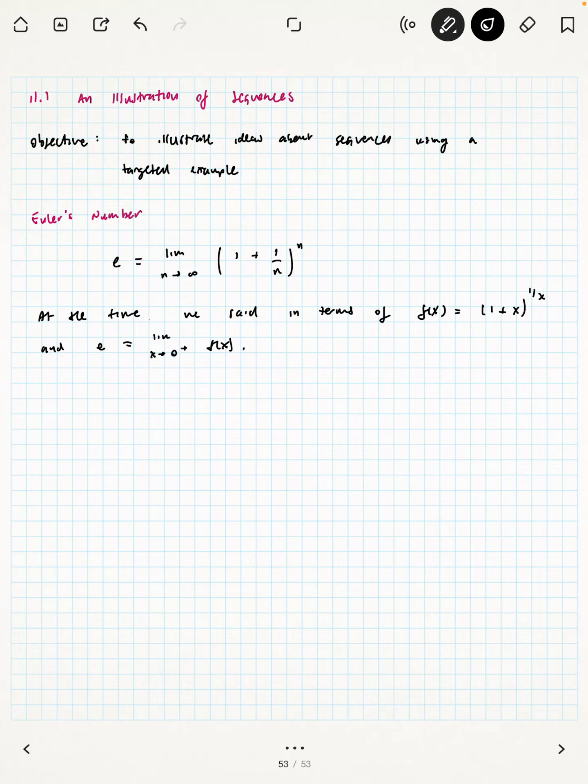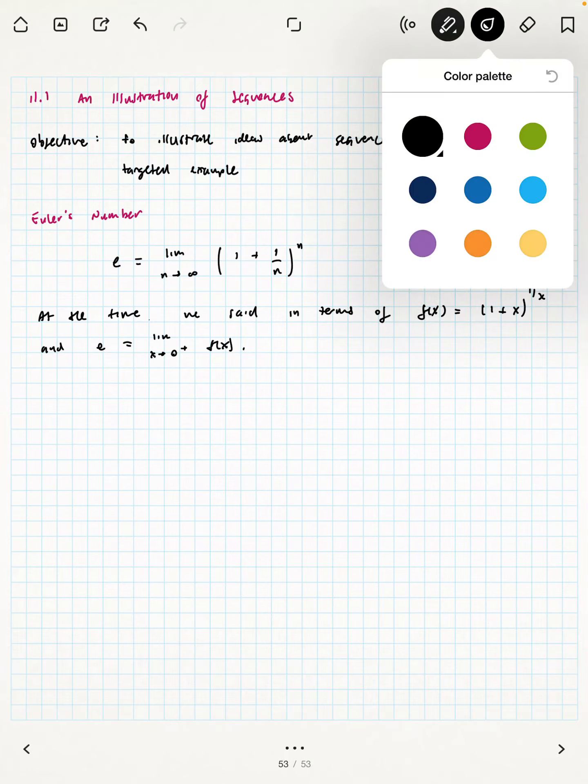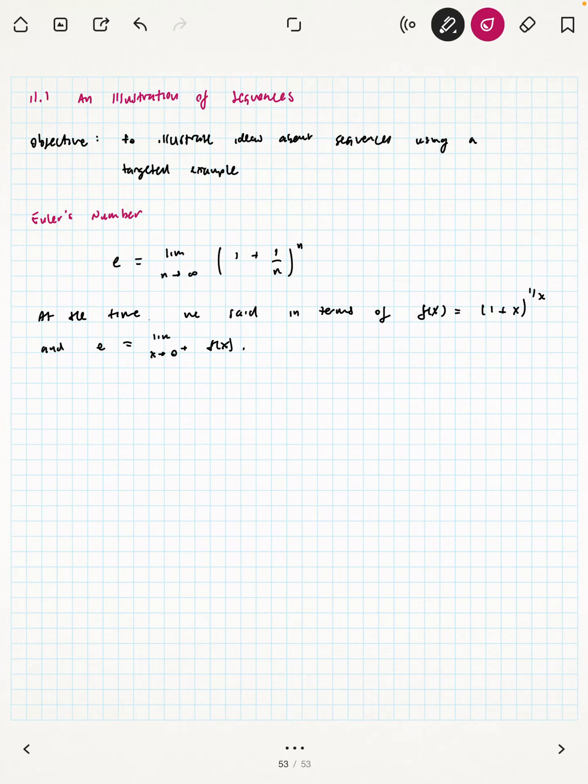In this case, instead of thinking about it as the functional limit in terms of x, we're thinking about a different variable, n. So what we want to do is restrict our thinking to the natural numbers, which we've previously written as blackboard N.